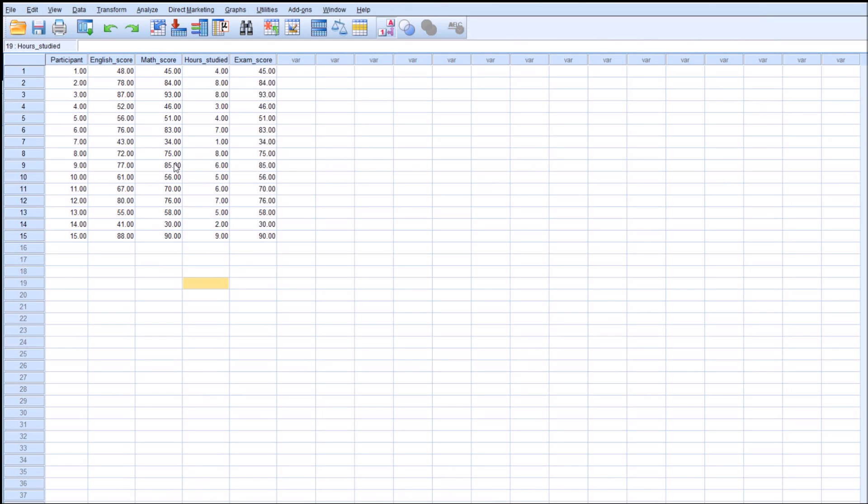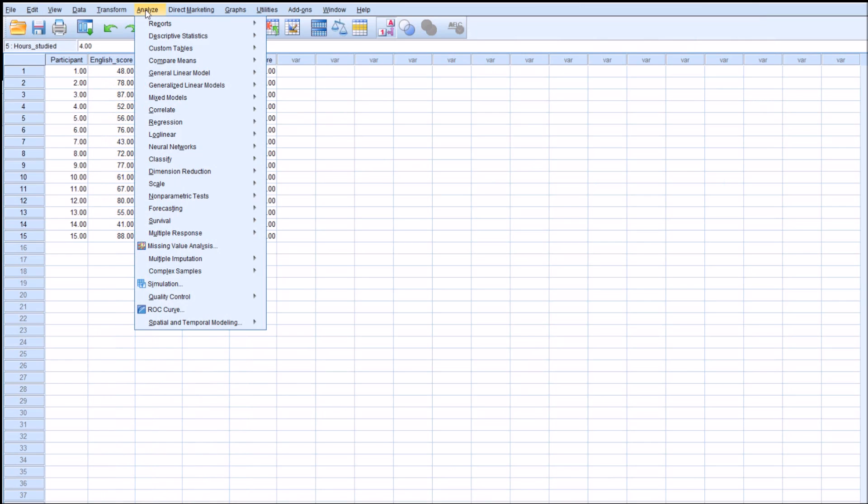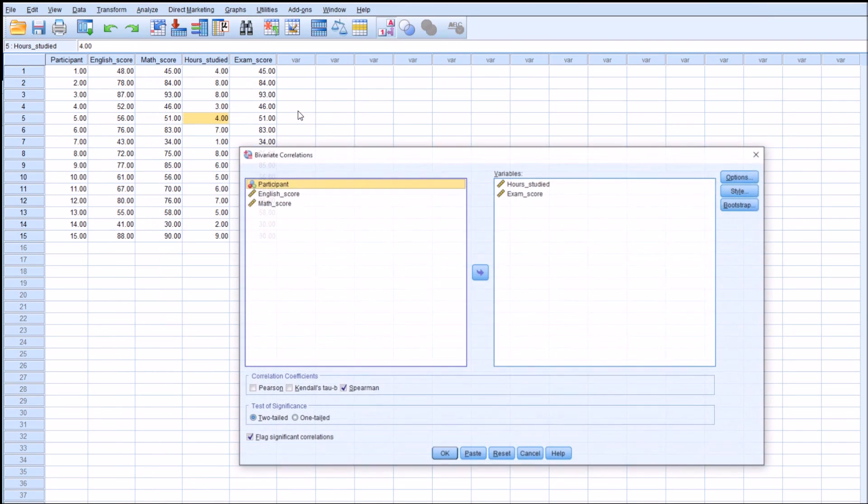Once you've entered the data in SPSS, you should have one column for each variable that you want to investigate. Don't worry about those two for now, that's for the next section, the nonparametrics. But once you have your data entered correctly, you can go to Analyze, Correlate, and Bivariate.